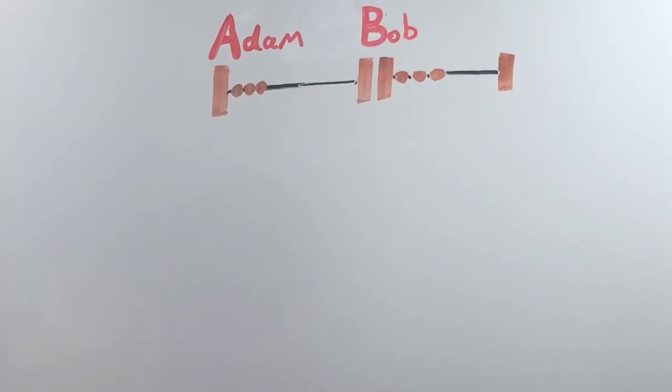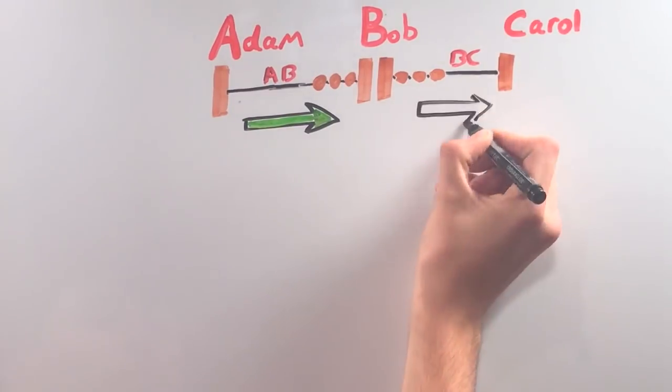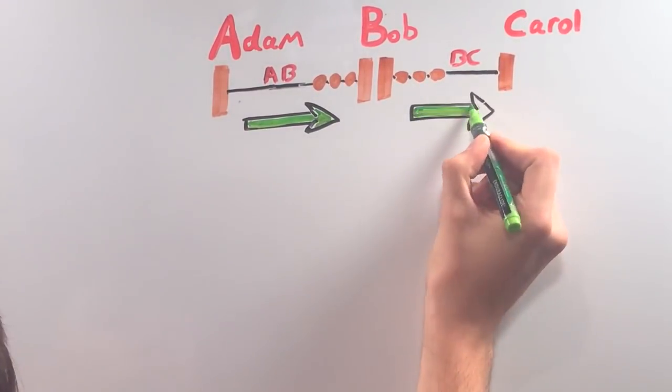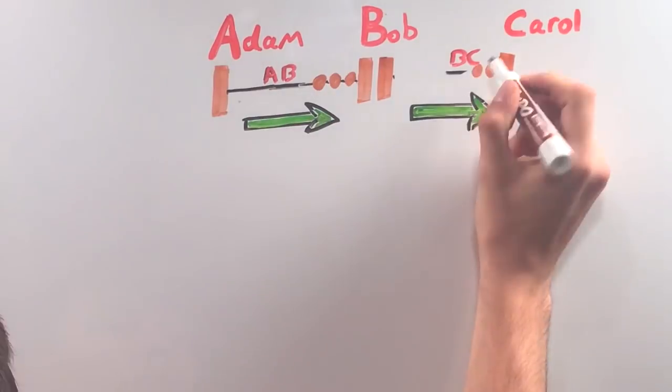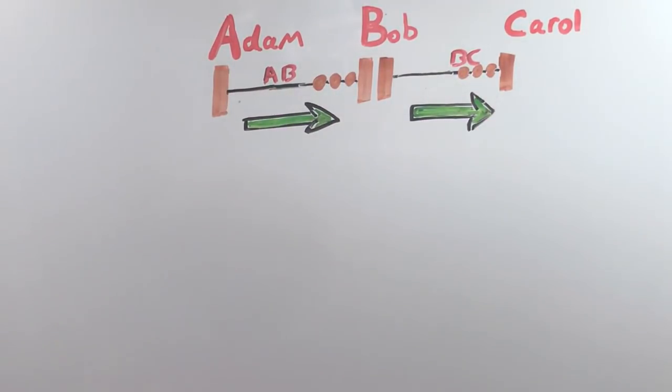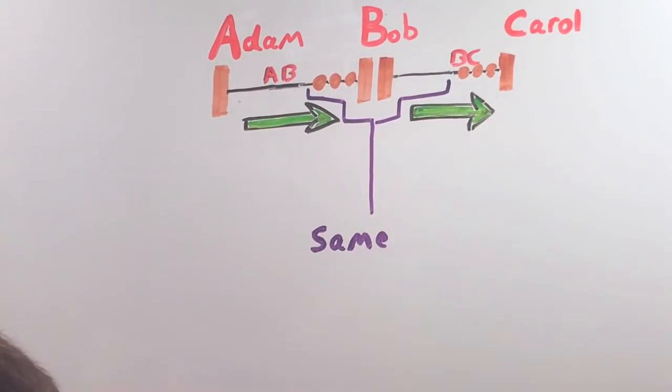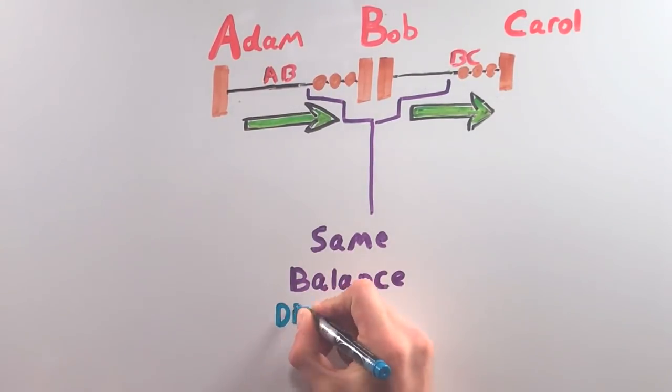Now let's get back to Adam, Bob, and Carol. If Adam wants to pay Carol, the transaction does not flow through Bob. Some of Adam's Bitcoin slides to Bob's end of the AB channel, and some of Bob's Bitcoin goes to Carol's end of the BC channel. Bob's total amount of Bitcoin has not changed, but his individual channel balances have shifted, and the direction he is now able to send his funds have as well.